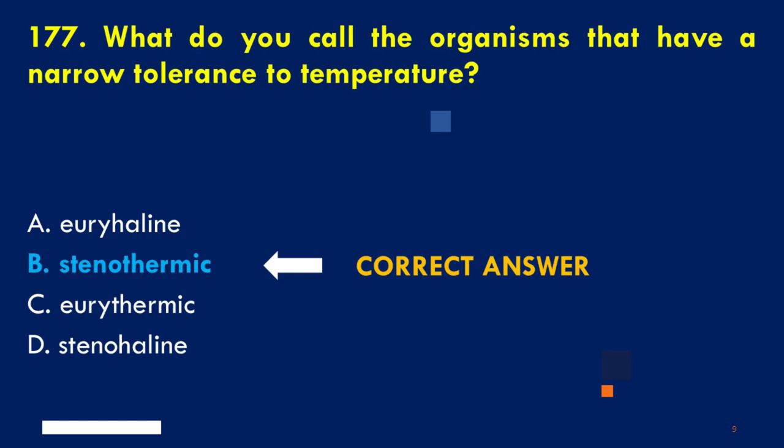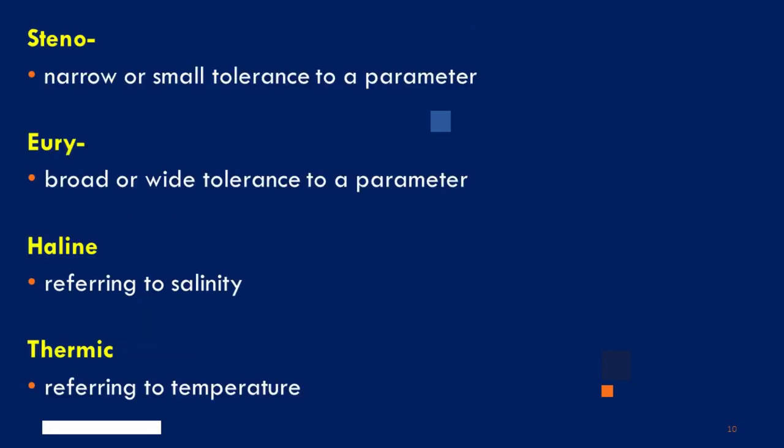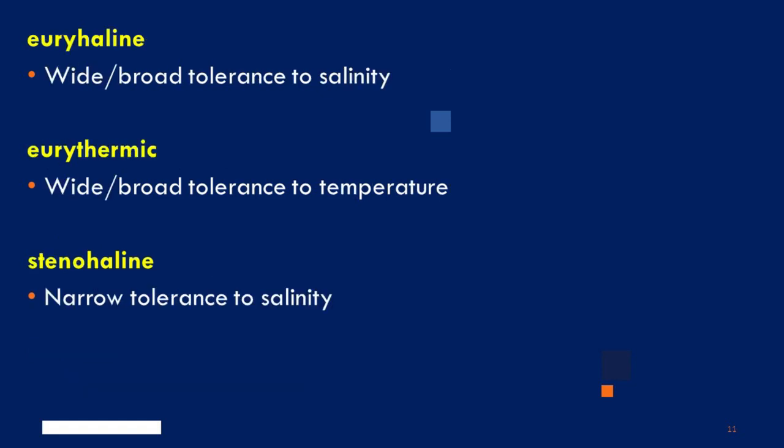Before we explain the other options, we must be familiarized first with the following terms. The prefix steno means narrow or small tolerance to a parameter, such as salinity, temperature, or food. The prefix eury means broad or wide tolerance to a parameter. The term haline refers to salinity, while the term thermic refers to temperature. So, Euryhaline species have wide or broad tolerance to salinity. Eurythermic means having wide or broad tolerance to temperature. And Stenohaline means having narrow tolerance to salinity.